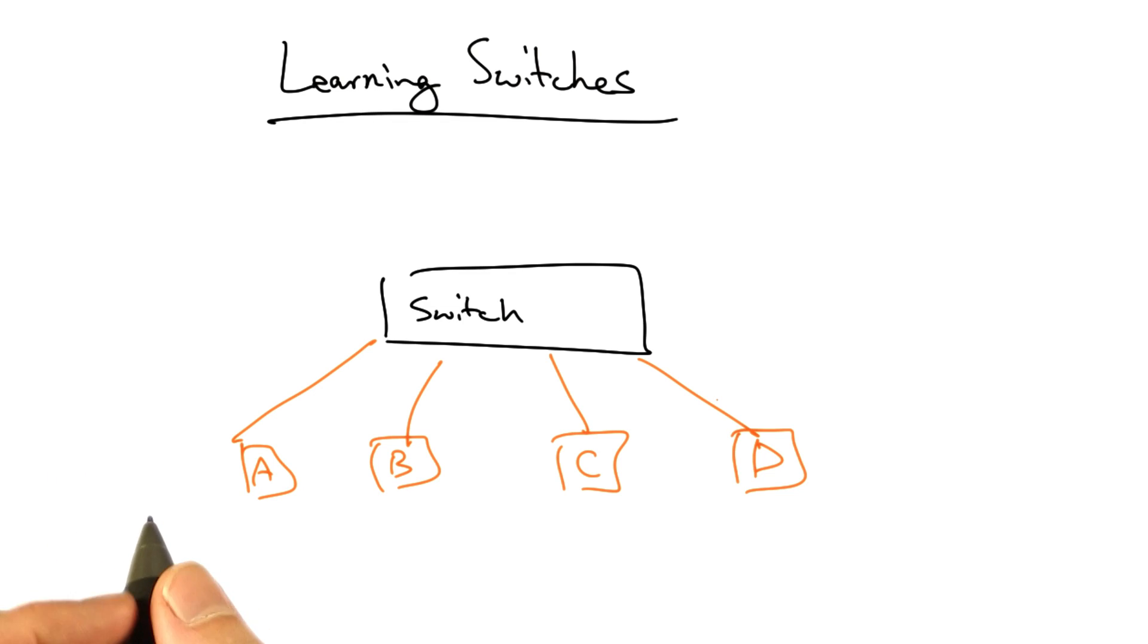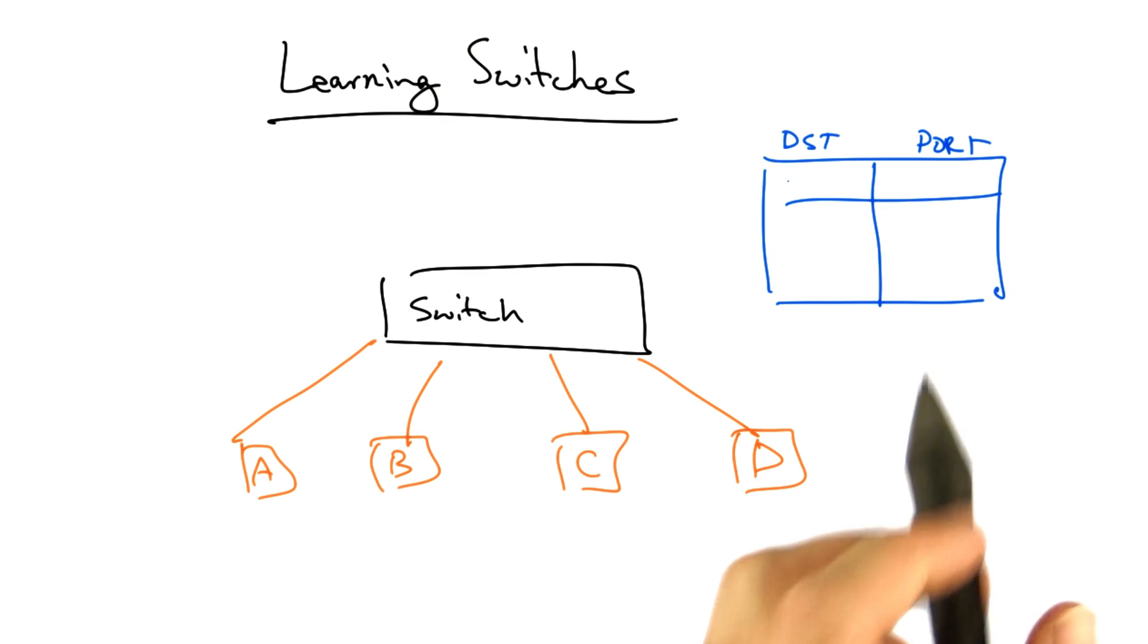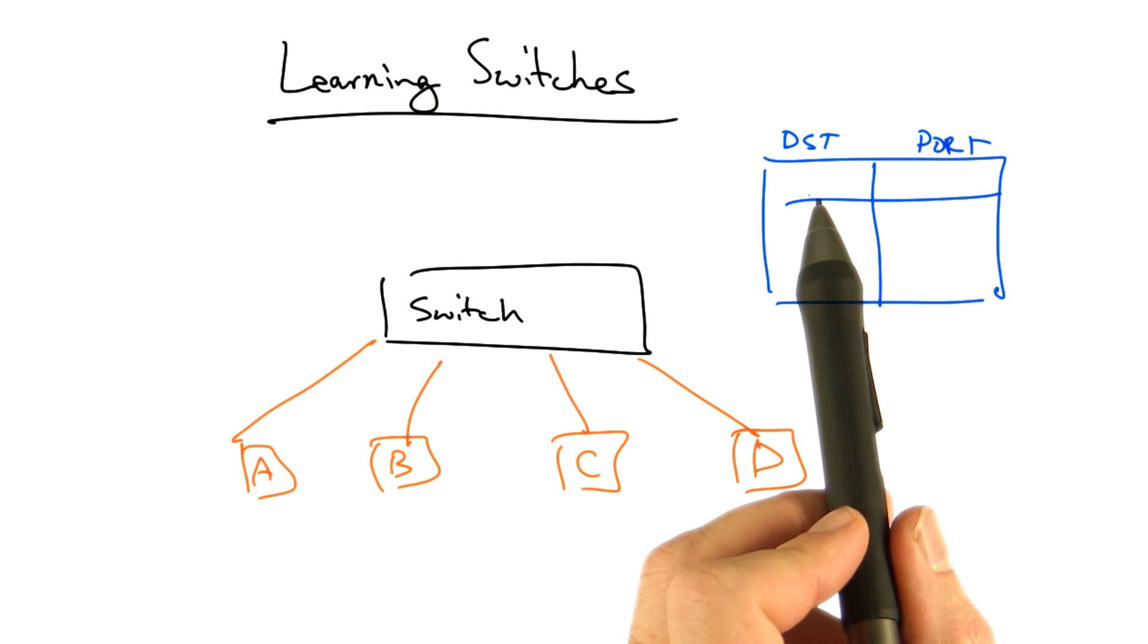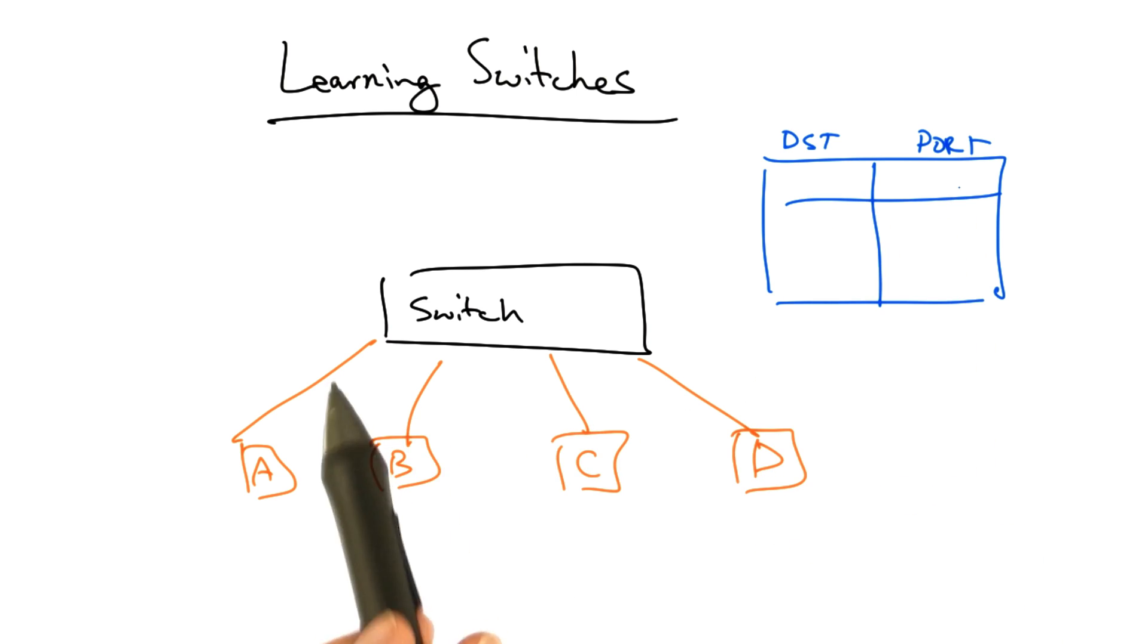Let's take a quick look at how learning switches work. A learning switch maintains a table between destination addresses and output ports on the switch, so that when it receives a frame destined for a particular place, it knows what output port to forward the frame.